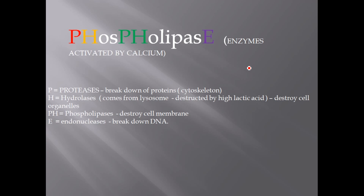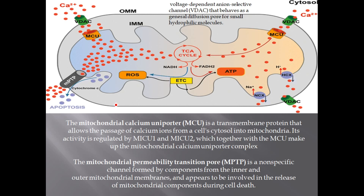Calcium can also activate endonucleases, which are responsible for the breakdown of DNA, causing pyknosis, karyorrhexis, and karyolysis. Additionally, calcium can enter the mitochondria through the mitochondrial calcium uniporter — a transmembrane protein allowing passage of calcium ions from the cytosol into the mitochondria. Its activity is regulated by MICU1 and MICU2, which together with MCU make up the mitochondrial calcium uniporter complex, and it can create a pore in the mitochondria.